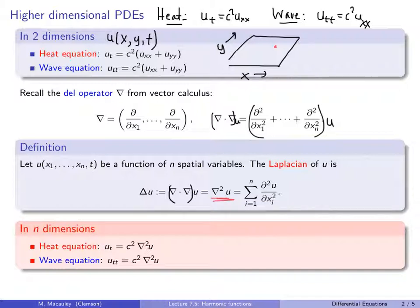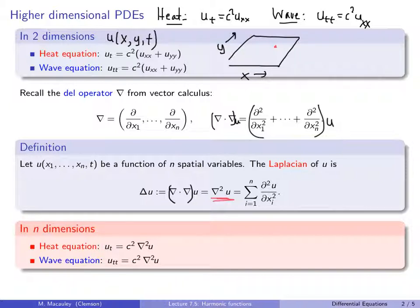It is the sum of the second spatial derivatives. If t is in here, we ignore it. You can still define this as the sum of the second derivatives even if u is not a function of time. The heat equation in n dimensions is ut equals some positive constant times the Laplacian of u, and the wave equation is utt equals some constant times the Laplacian of u. In two dimensions these reduce to those equations, and in one dimension they reduce to the original PDEs.